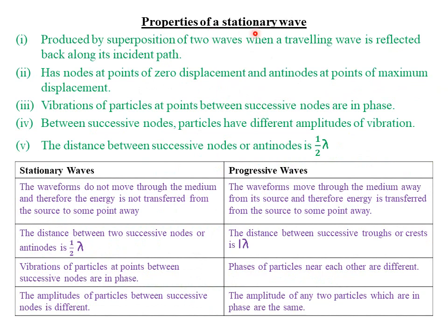The properties of stationary or standing waves are: first, stationary waves are produced by superposition of two waves when a traveling wave is reflected back along its incident path. Second, stationary waves have nodes at points of zero displacement and antinodes at points of maximum displacement. Third, vibrations of particles at points between successive nodes are in phase. Fourth, particles between successive nodes have different amplitudes of vibration. Fifth, the distance between successive nodes or antinodes is half the wavelength.